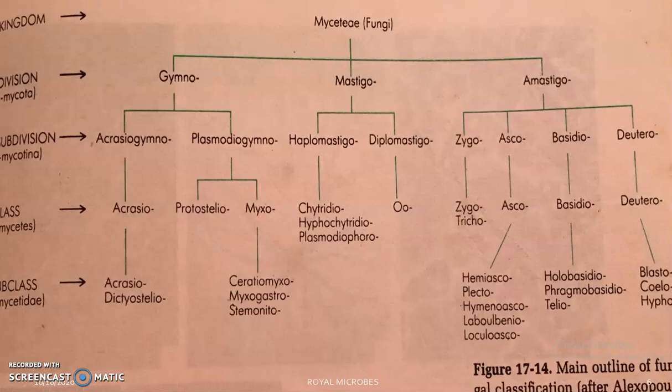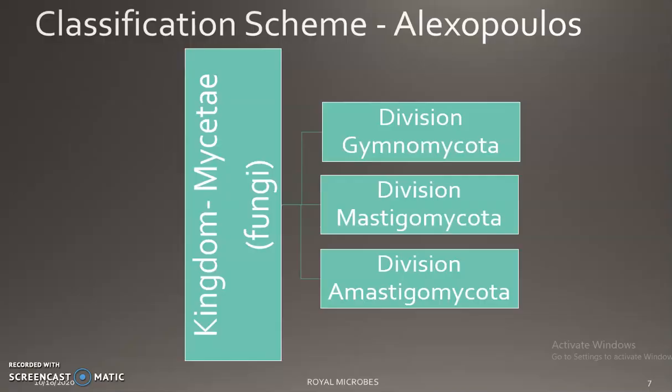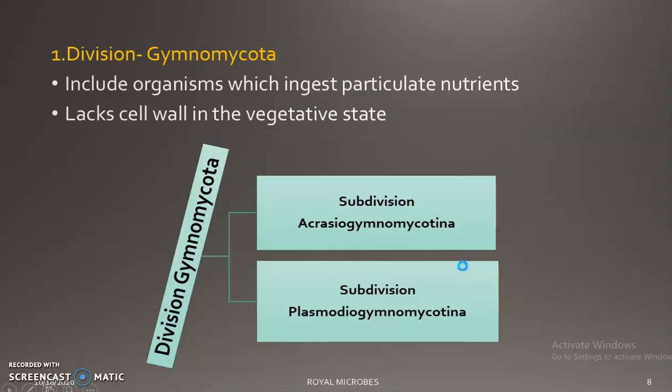This is the overall outline of fungal classification given by Alexopoulos, which we have already discussed. Coming to the details: first we can see Kingdom Mycetae, which is divided into three divisions — Gymnomycota, Mastigomycota, and Amastigomycota.